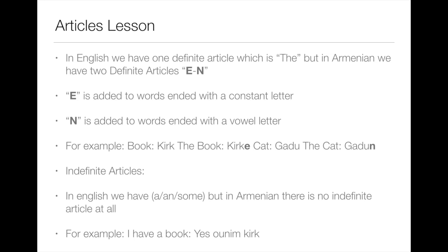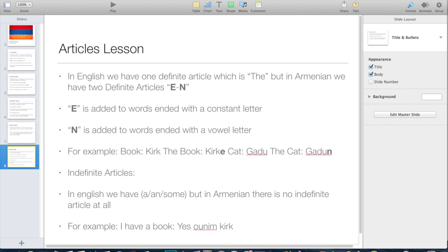We also have indefinite articles. In English we have 'a', 'an', and 'some', but in Armenian there are no indefinite articles at all. For example, 'I have a book' is simply 'yes unem kirk'.